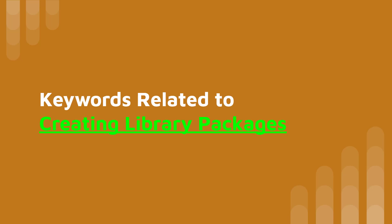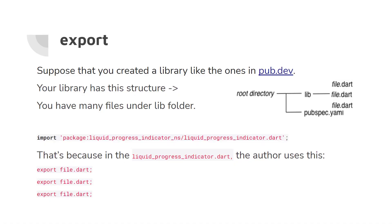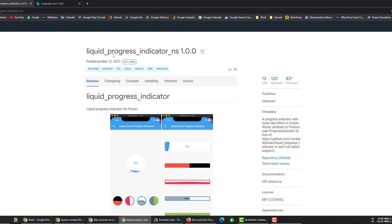Keywords related to creating library packages. Creating library packages is not something all programmers will do — it means you create a package and upload it to pub.dev so other users can install and use it in their programs. For example, if we go to pub.dev, we can find packages there.